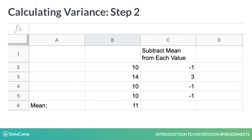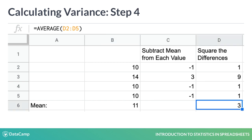In the third step, square all these differences from the average. Negative 1 squares to 1, and 3 squared equals 9. Finally, take another average of the squared differences: 1 plus 9 plus 1 plus 1 equals 12, divided by 4 equals 3. That was easy, but a bit cumbersome.